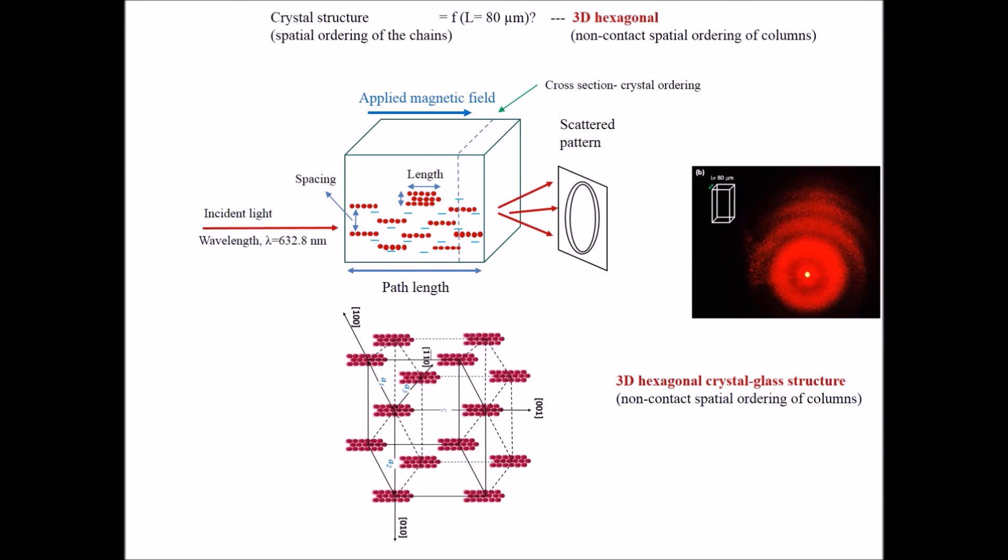Analysis of concentric diffraction ring pattern confirms 3D crystal ordering of the field-induced columns for the path length of 80 micrometer. Since the field strength is moderate 300 Gauss, the columns at the crystal lattice vertices undergo thermal fluctuation, which introduces crystal disorder of first type.